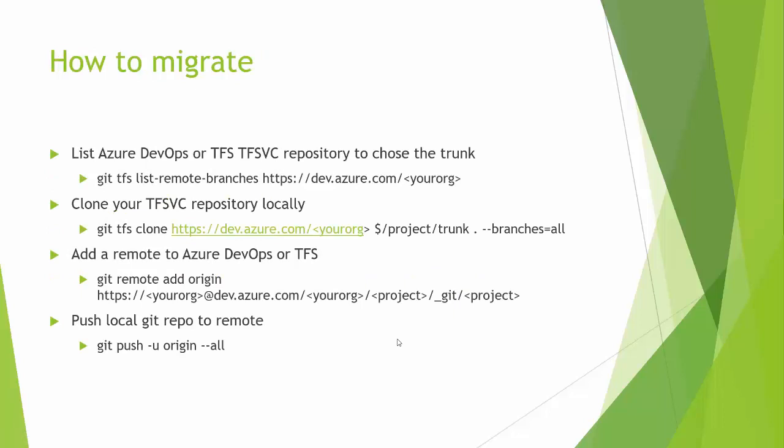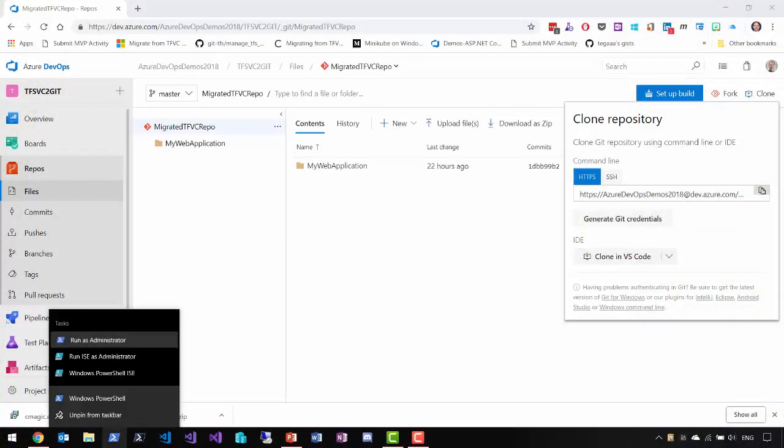To actually migrate, we need an Azure DevOps TFVC repository or a general TFS repository. We go to the command line and run 'git tfs list-remote-branches' with our organization's Azure DevOps org or TFS URL, and that'll list all the branches and give us the trunk — basically the beginning of where all of our branches are — and which one we should pick when we want to clone everything. Then we clone that repository and all its branches into a Git repo, add a new remote to push to Azure DevOps, and push our local repository up.